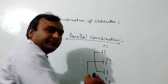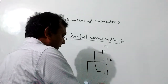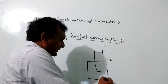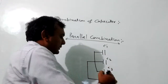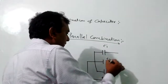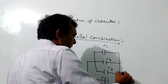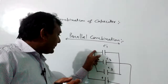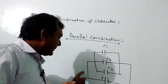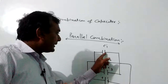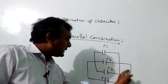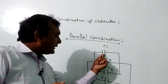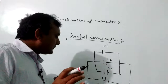This is the positive pole and this is the negative minus pole. This is C3 capacitor and we can see that this is the first pole — the positive pole — and this is the second pole. The battery is connected to three capacitors.